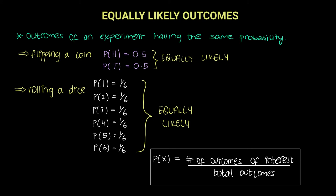So, when you can identify that a question involves equally likely outcomes, you do not need to calculate each individual probability. In fact, depending on what the question is asking you, you simply need to write the number of outcomes of your interest in the numerator and divide it by the total number of outcomes.